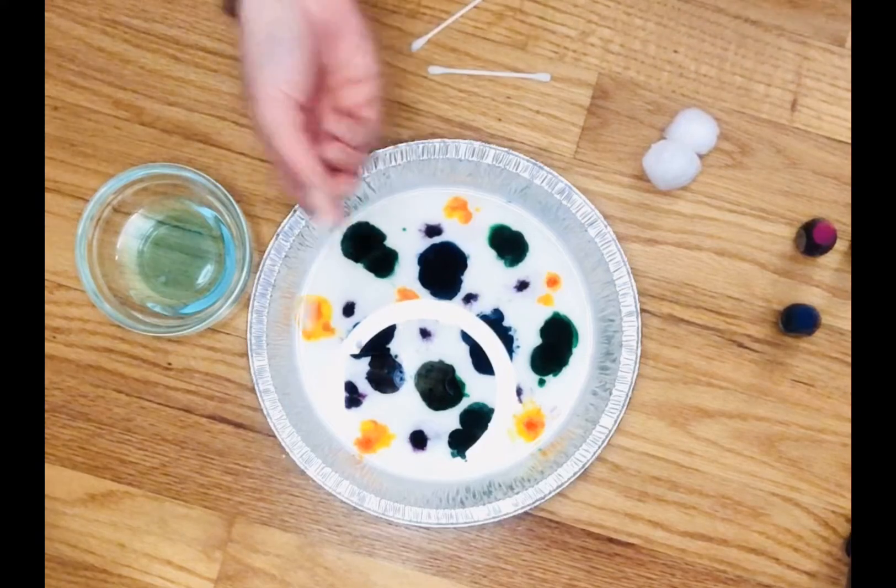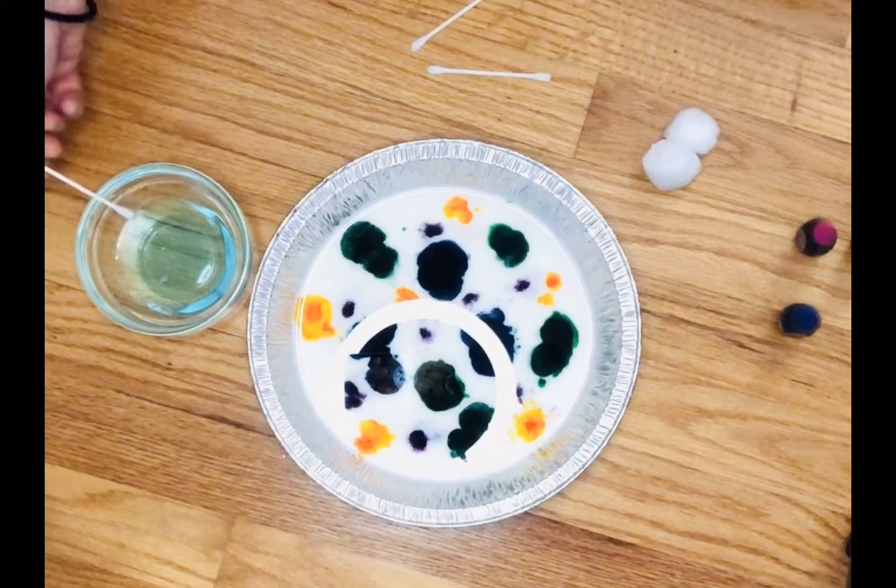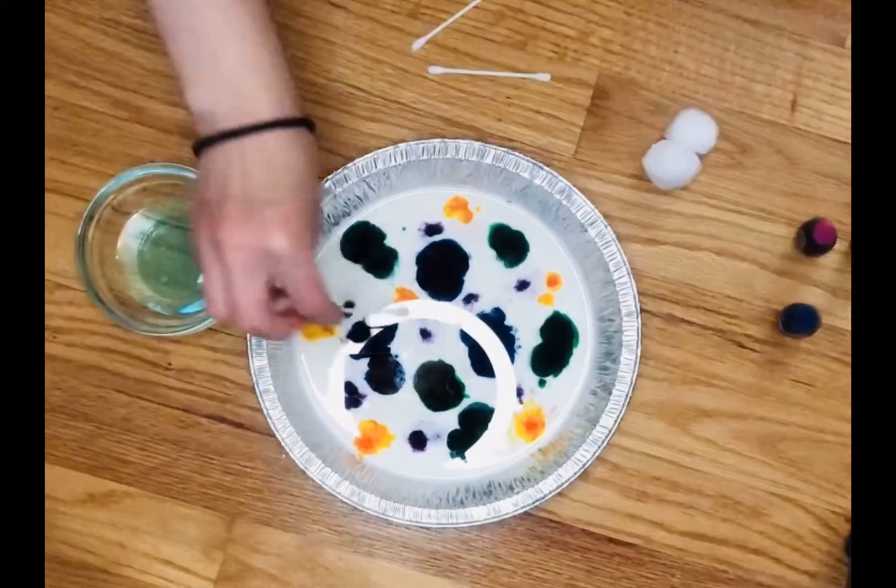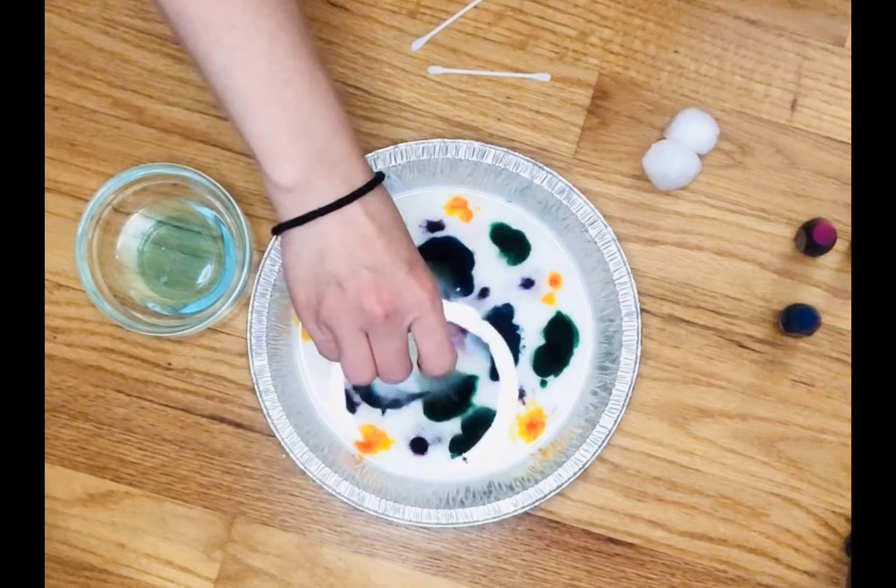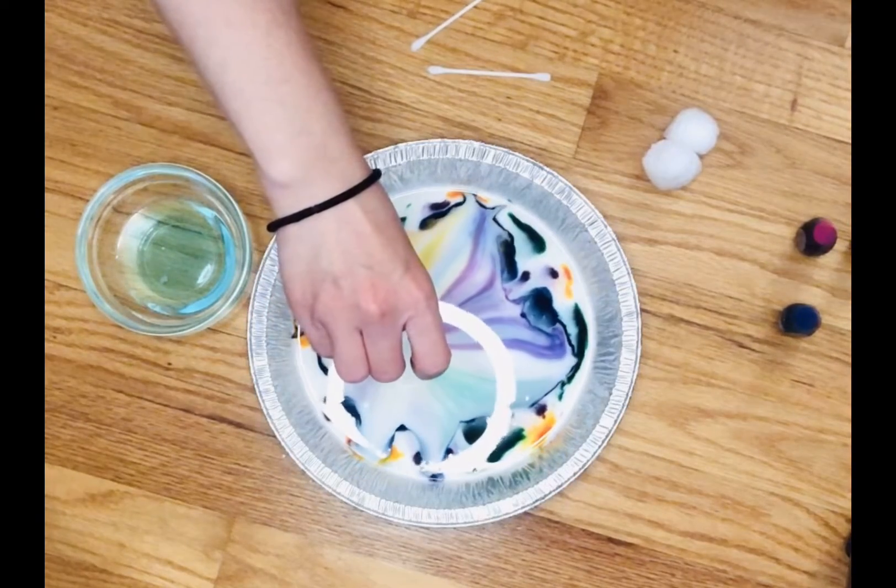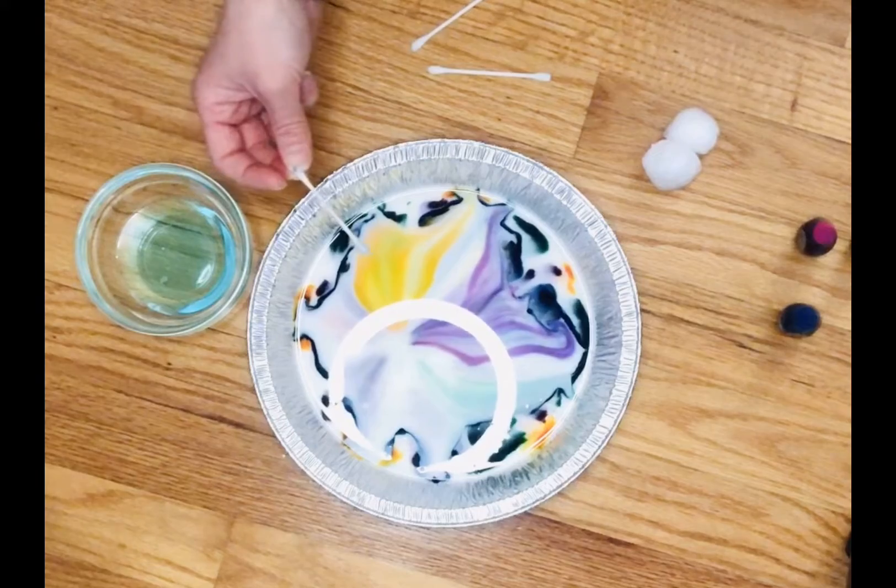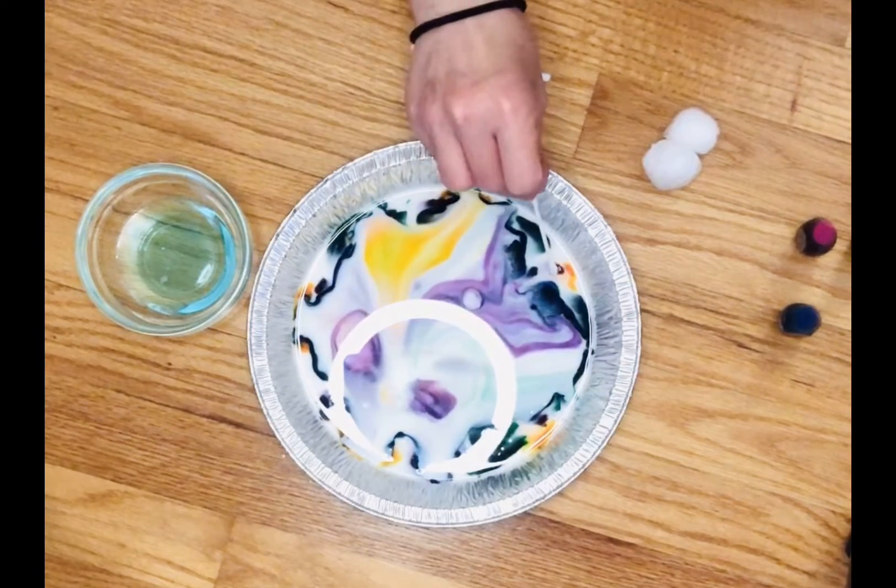So I'm going to start by using the q-tip. I'm going to dip it in the dish soap and watch what happens when I dip it into the pan. Did you see that? The colors were trying to escape. What if I dip it over here?